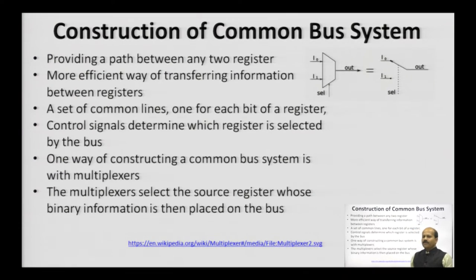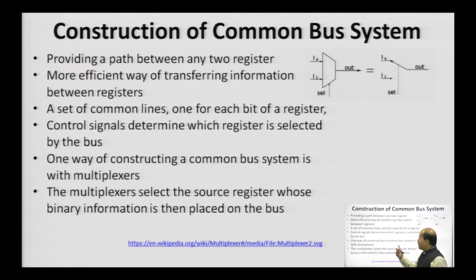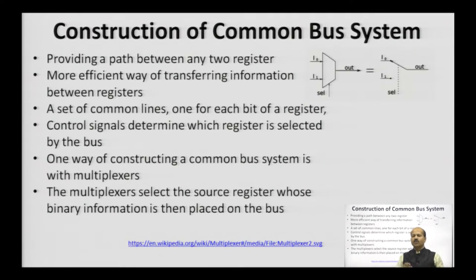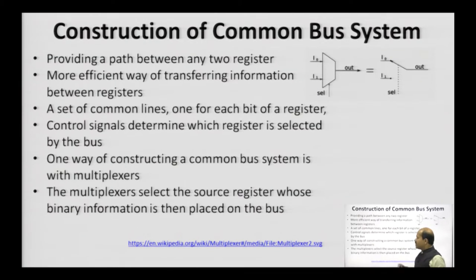Let us have a discussion of bus connecting registers or various components in the system. A bus basically provides a path between any two registers. It is the most efficient way to transfer data between any two given registers. It is a set of lines in terms of data transfer or control transfers. Various control signals are issued to select a particular register whenever register transfer is taking place. One way of constructing a common bus system is with a multiplexer. Using a multiplexer, we can select one out of a given set of registers.